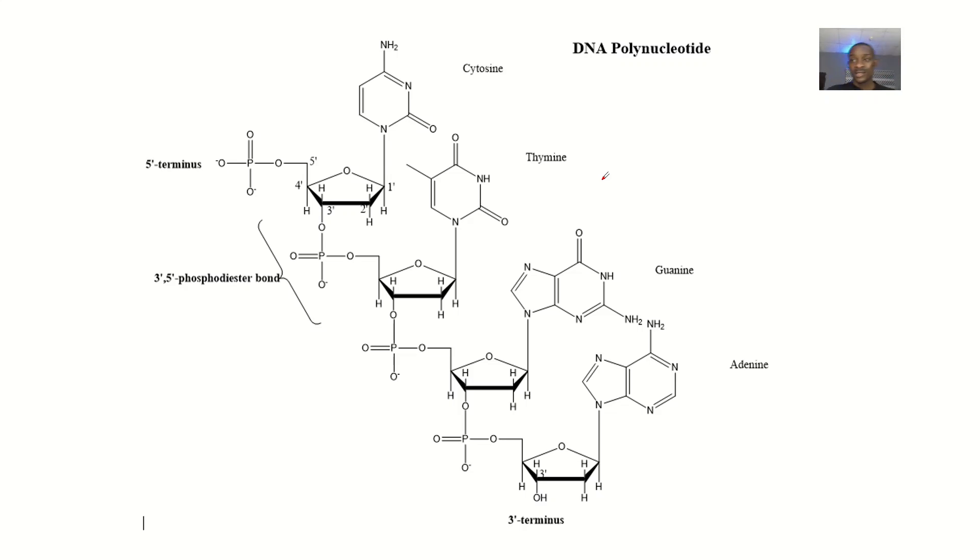So what is a nucleotide? A nucleotide is a structure consisting of what? A sugar, a phosphate group, and a nitrogenous base. So your ability to learn how to draw a nucleotide, or different types of nucleotide, can help you to be able to draw a polynucleotide.